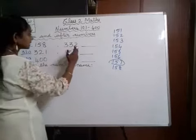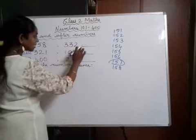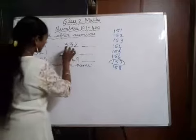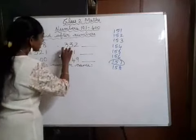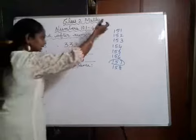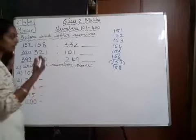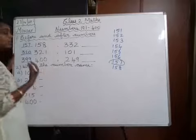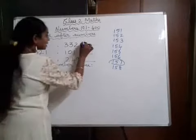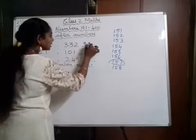Next is 'after.' If the dash is after the number, you have to do it like this. For example, 332 — after 332, you say the numbers from 330, 331, 332, 333. So after 332, 333 comes.